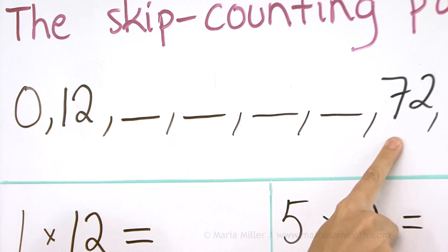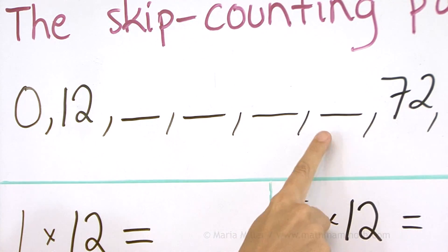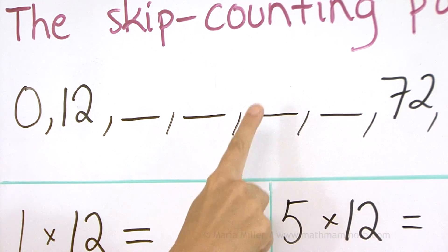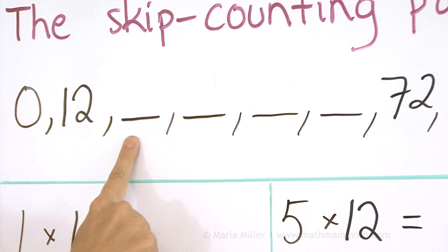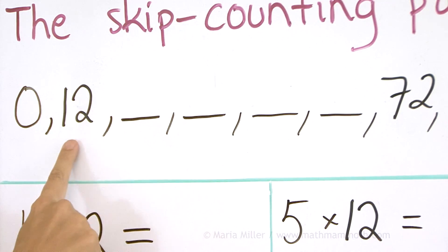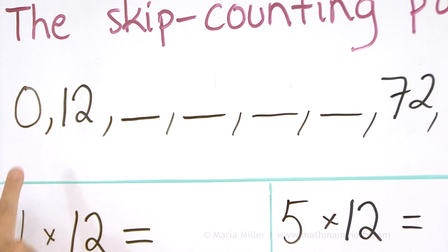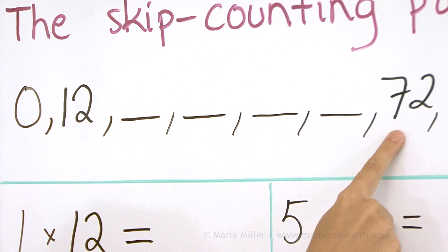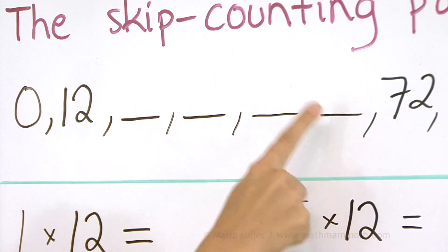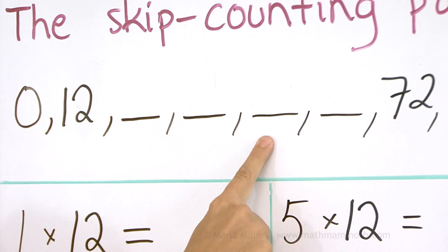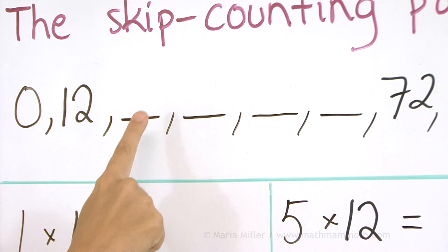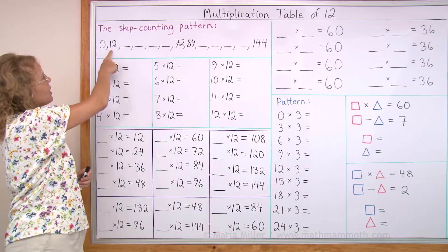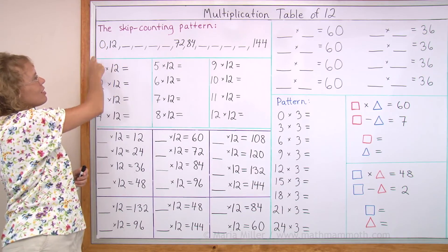And then backwards: 72, 60, 48, 36, 24, 12, 0. Your turn: 72 ... 12 ... and 0.